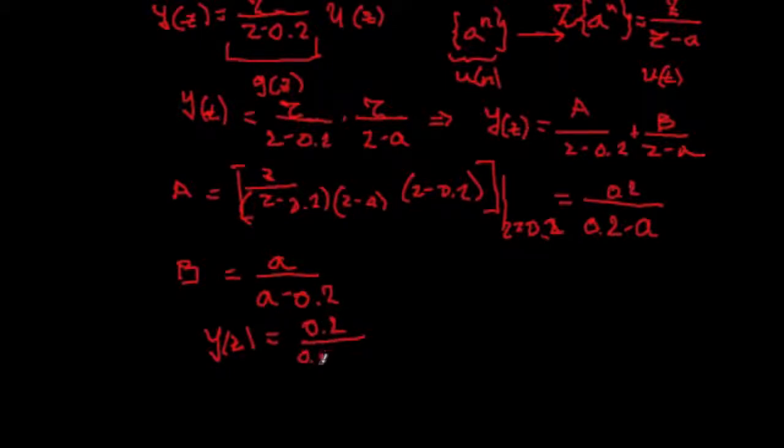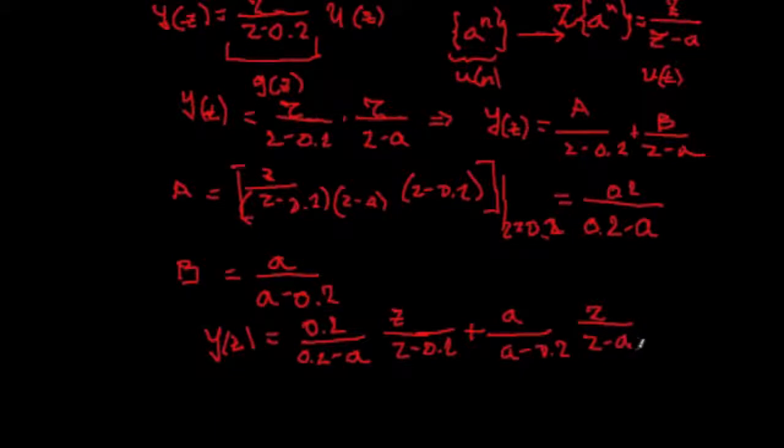We obtain these two coefficients, such that, finally, we obtain that Y(z) is equal 0.2 over 0.2 minus a, multiply z over z minus 0.2, and formally, plus a over a minus 0.2, times z over z minus a. So, here is the A, and here is the B.